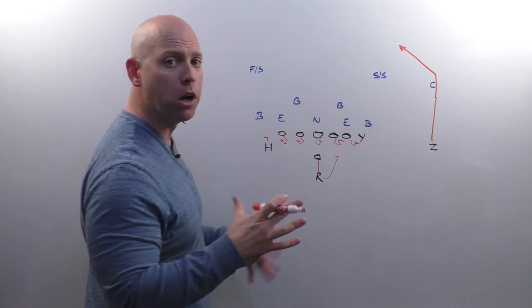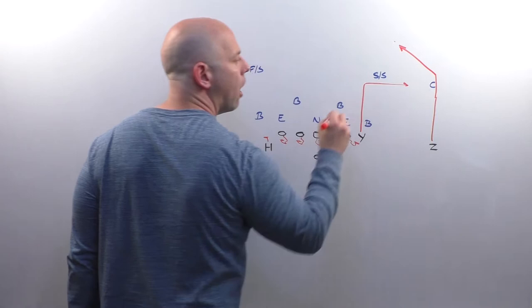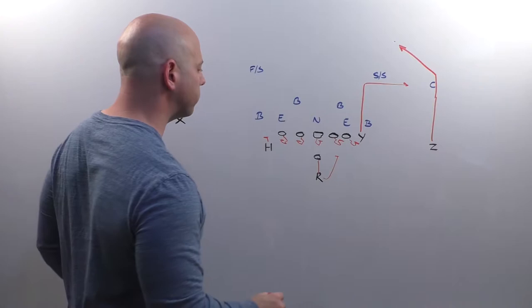Our Y, in this case, our inside receiver, and our routes are mirror route concepts, so outside receiver and inside receiver are basically running the same thing to both sides with one exception on the check release. We're going to get a 10-yard, 90-degree out. Okay, so he's going to get a 10-yard release, turn 90 degrees, and run the out.